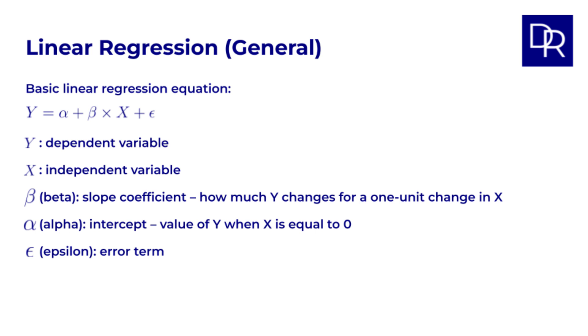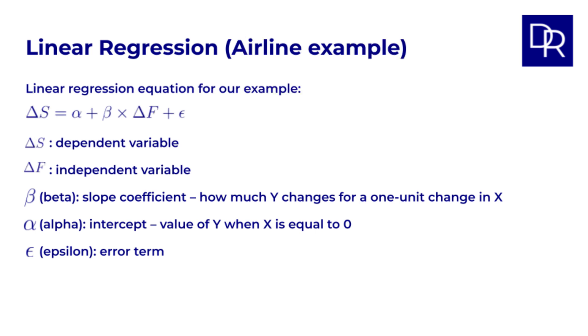The basic equation is y equals alpha plus beta times x plus epsilon. If y is the dependent variable, x is the independent variable, beta is the slope coefficient, it tells us how much y changes for one unit change in x. Alpha is the intercept, which is the value of y when x is equal to zero. Epsilon is the error term. In a hedging context, we want to predict changes in the spot price of jet fuel, delta s, based on changes in the price of crude oil futures, delta f.